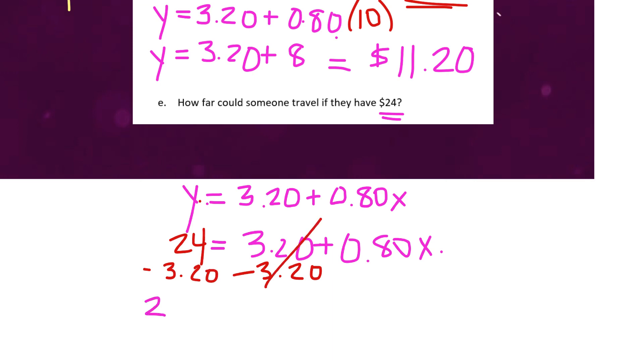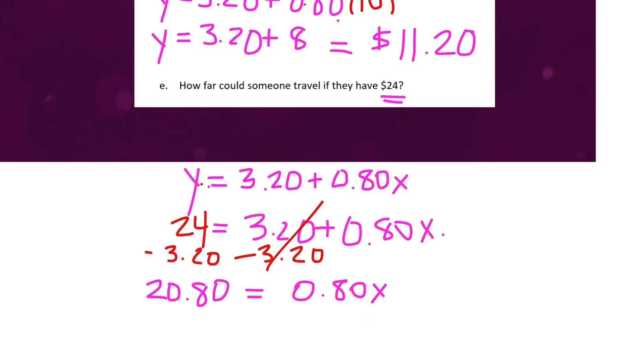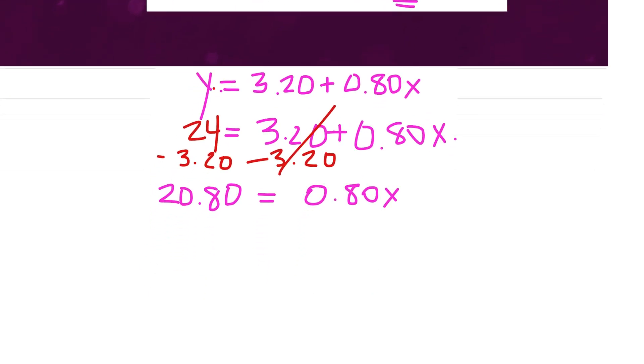That would get us 20.80 on the left and 0.80x on the right. And then our last step here would be to divide everything by 0.80. Cancelling that out. And we're going to get our answer of 26.